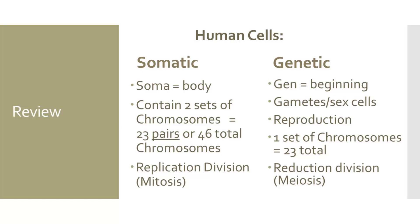Somatic cells form the body of a multicellular organism. They are responsible for the organism's function and structure. Somatic cells contain two sets of chromosomes, one set from each parent. This means that each cell has 23 pairs of chromosomes, or 46 total chromosomes. In order for a somatic cell to divide, they undergo mitosis, which is replication division. This means that at the end of the division, two identical daughter cells are created from one parent cell.